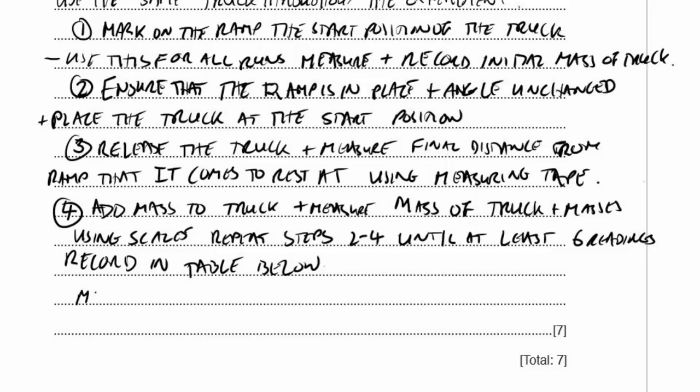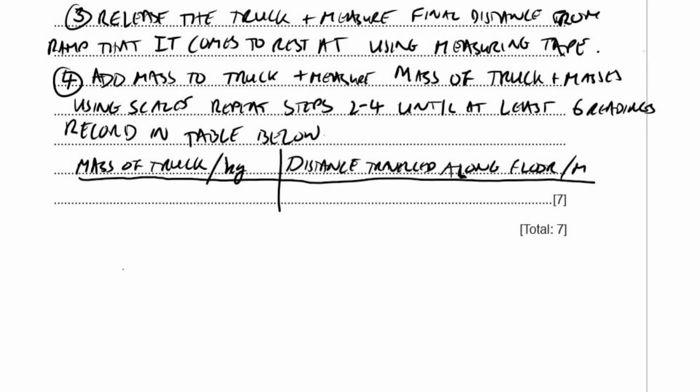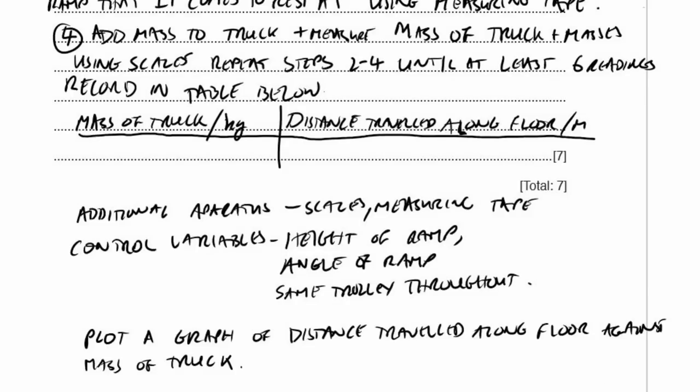Let's draw the table we're going to use. We've got the mass of the truck in kilograms, distance travelled along the floor in metres. I'm going to put some information down about the additional apparatus I need: scales and measuring tape. Control variables: the height of the ramp, the angle of the ramp, using the same trolley throughout. Maybe the only other thing to do is say plot a graph of distance travelled along the floor against the mass of the truck. Don't need to say that, but just in case there's any marks for suggesting a graph. I've got my control variables, additional apparatus, a series of steps I can repeat. I think that's a pretty good answer.